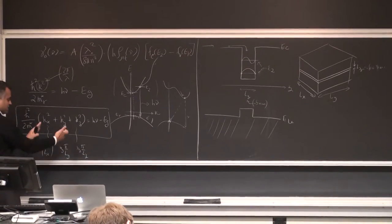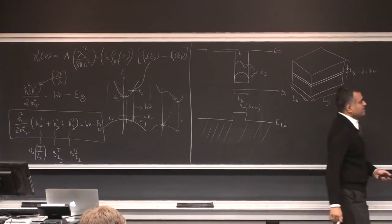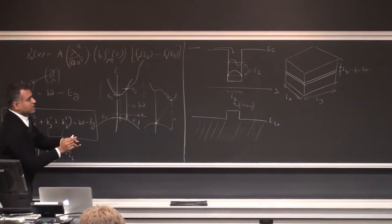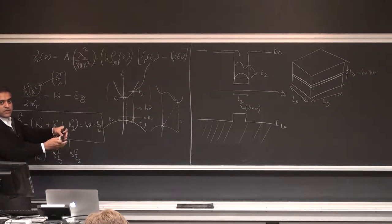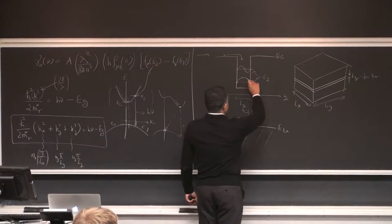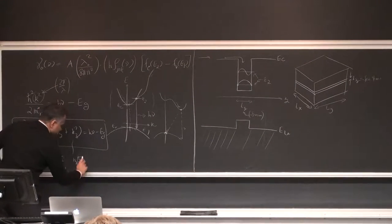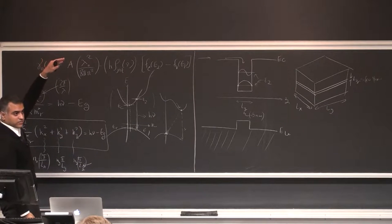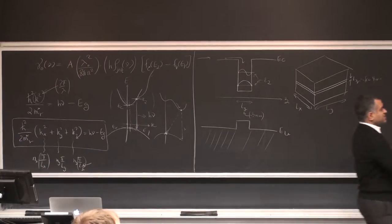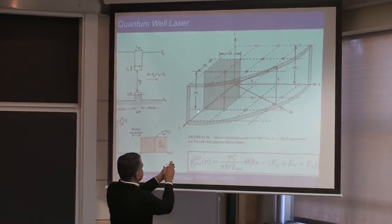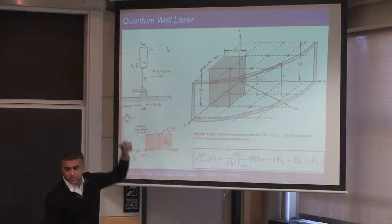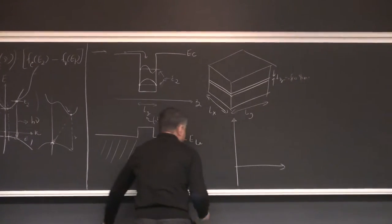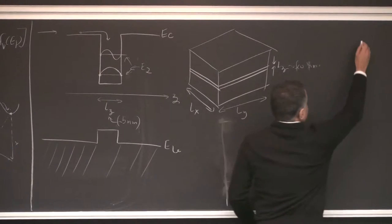Taking a derivative of the dispersion relation h-squared(Kx² + Ky² + Kz²)/(2m*_r) = h-nu minus Eg, with Kz fixed by quantization, we get m*_r · K-parallel · dK-parallel = m*_r · d(h-nu)/h-bar². Substituting into our state-counting expression and moving the quantization energy to the right-hand side, the bandgap term becomes an effective bandgap: Eg plus the confinement energy from the conduction band (h-bar²·π²·Nz²)/(2m*_c·Lz²) plus the confinement energy from the valence band. This is a powerful tool — by changing Lz from 4 to 6 nanometers, you can tune the emission wavelength from, say, blue to green.